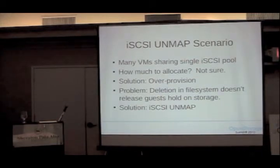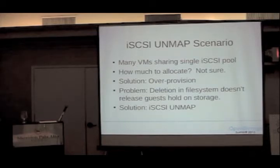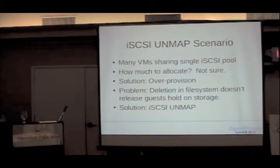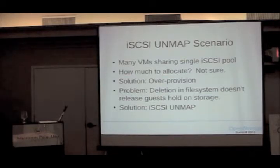What iSCSI UNMAP allows us to do is over-provision. When a client temporarily uses a bunch of space, as long as they delete it, I get to reclaim it. Without iSCSI UNMAP, when a guest deletes the data, the host has no way of knowing about it — it hasn't been informed. So even though the file system in the guest thinks it's deleted the data, the virtual drive, the Comstar target, doesn't know about it. iSCSI UNMAP fixes this.